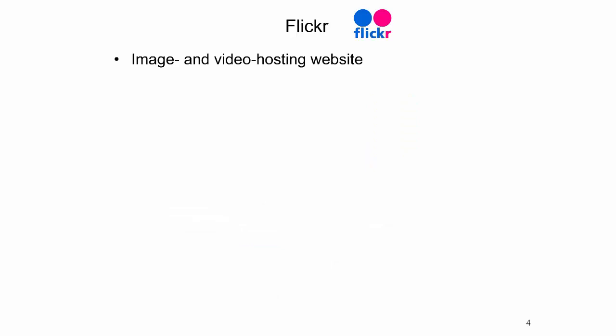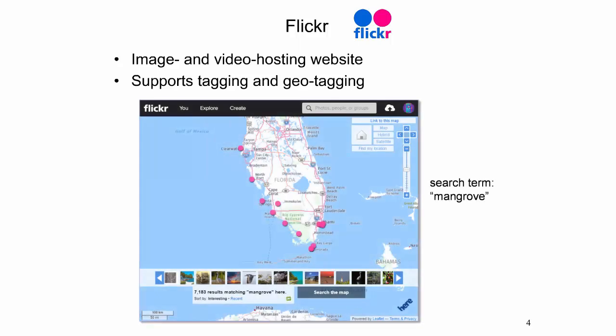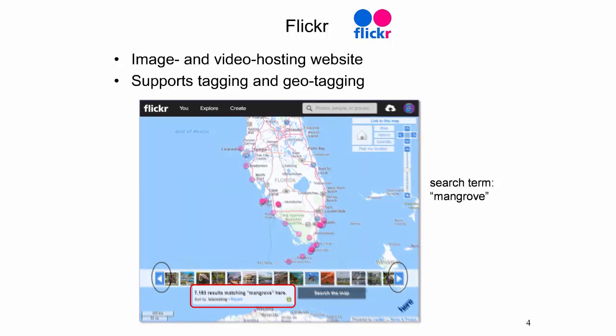The next social media platform, Flickr, is an image and video hosting website. Users can label their uploaded images with titles and descriptions, also known as tags. Images and videos can be annotated with geographic coordinates via geotagging, a process often automatically achieved through a GPS-enabled device such as a smartphone. Geotagged images can be visualized on maps or searched in a region of interest on the Flickr website or through the API. This map of central and southern Florida shows locations of geotagged Flickr images containing the term 'mangrove' in their description or tags — a total of 7,183 images match the search term, though only 15 are shown on the map to avoid overcrowding.